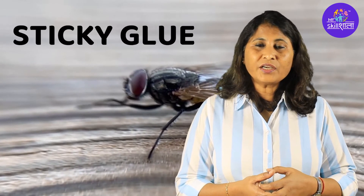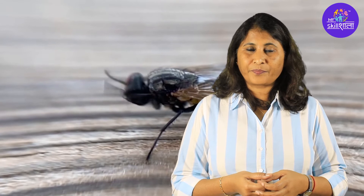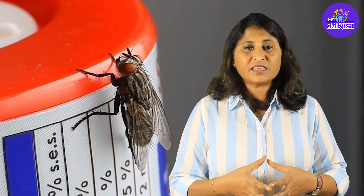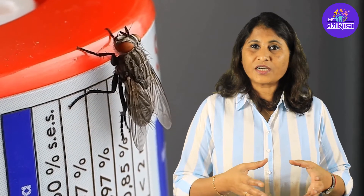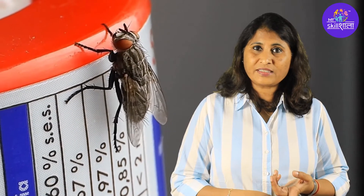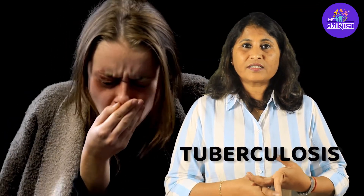Plus, on their tongue they have a sticky glue which is a coating on their tongue. And because they go wherever they go, they collect the germs and dirt on their body, and where they go they spread them, which is why you get diseases like tuberculosis, typhoid.